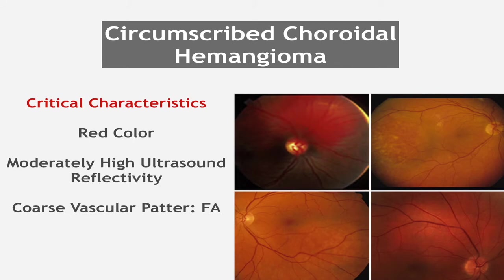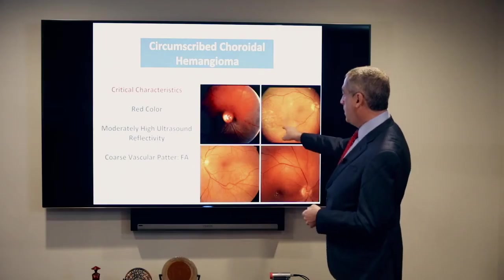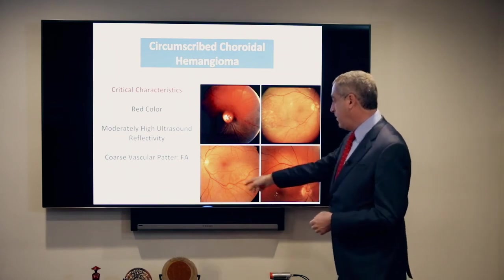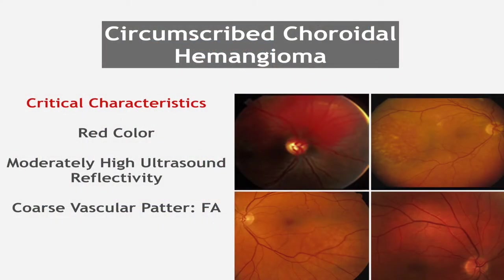The circumscribed choroidal hemangioma — here are several cases: this reddish tumor next to the disc, this orange tumor temporal to the macula, inferior to the macula, or supra-temporal to the macula. All of these are hemangiomas. They tend to be reddish, have moderately high internal reflectivity, and a coarse vascular pattern on angiography.